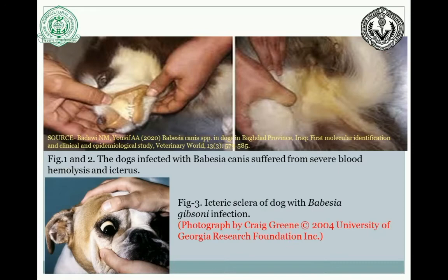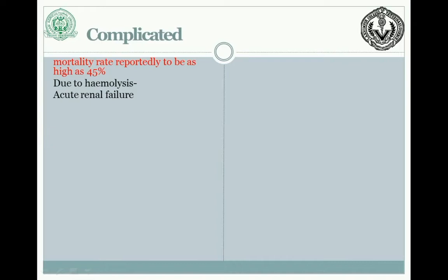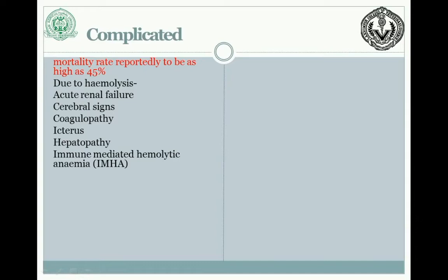The disease is also classified into complicated and uncomplicated forms. The complicated form is mainly due to hemolysis and includes acute renal failure, cerebral signs, coagulopathy, hepatopathy, and immune-mediated hemolytic anemia. The immune-mediated hemolytic anemia is an autoimmune response in which IgG antibodies are released against the host's own cells, causing continuous hemolysis. Even after treatment, the anemia may continue to occur.